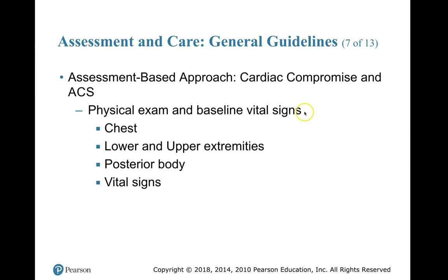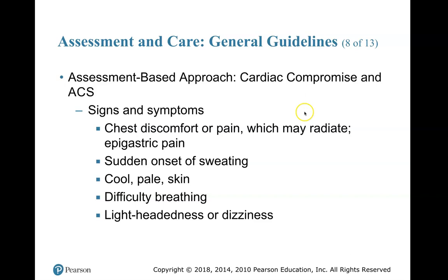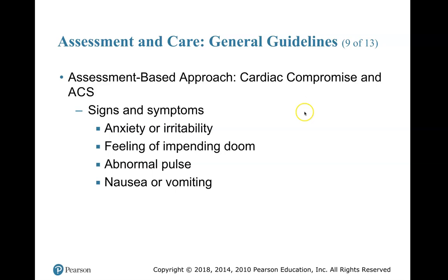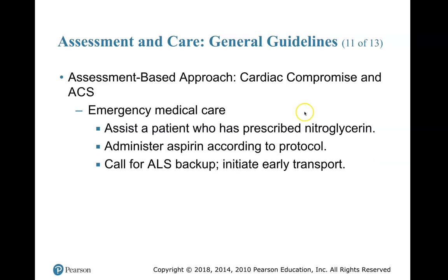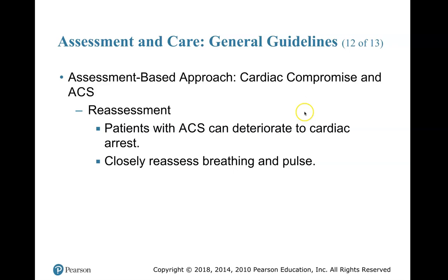Signs and symptoms of cardiac compromise and ACS: chest discomfort or pain which may radiate, epigastric pain, sudden onset of sweating, cool pale skin, difficulty breathing, lightheadedness or dizziness, anxiety or irritability, feeling of impending doom, abnormal pulse, nausea or vomiting. Emergency medical care: provide reassurance and place the patient in a position of comfort. Apply oxygen per 2010 AHA guidelines. Assist the patient who has prescribed nitroglycerin. Administer aspirin 162 to 324 milligrams per protocol. Call for ALS backup and initiate early transport. In reassessment, ACS patients can deteriorate to cardiac arrest — monitor every 3 to 5 minutes and closely reassess breathing and pulse.